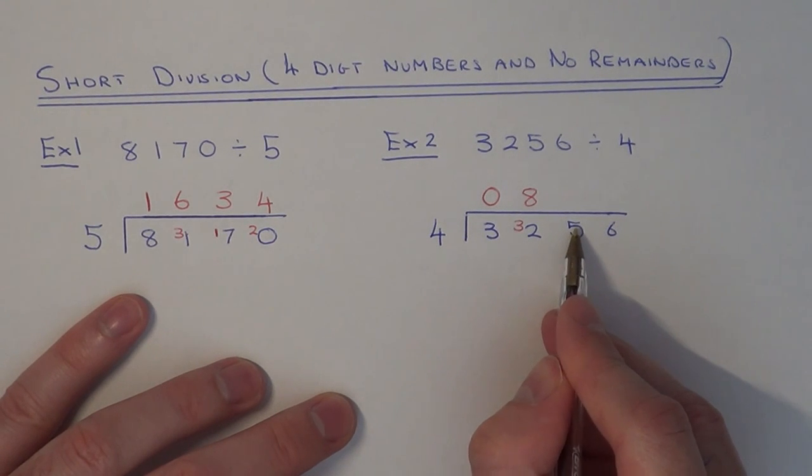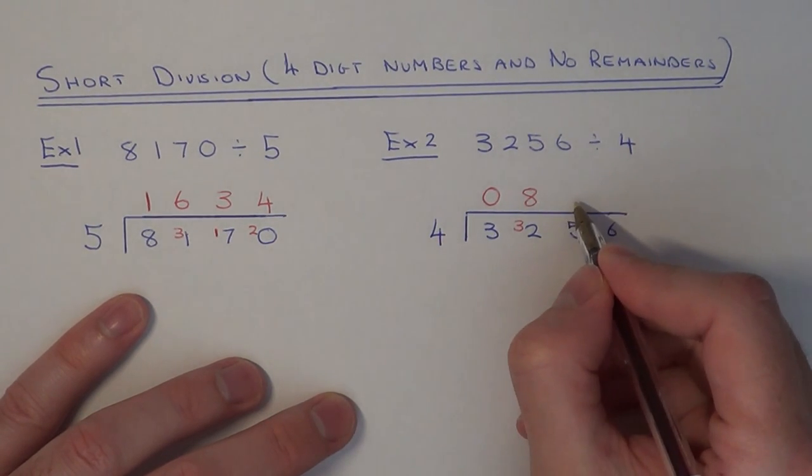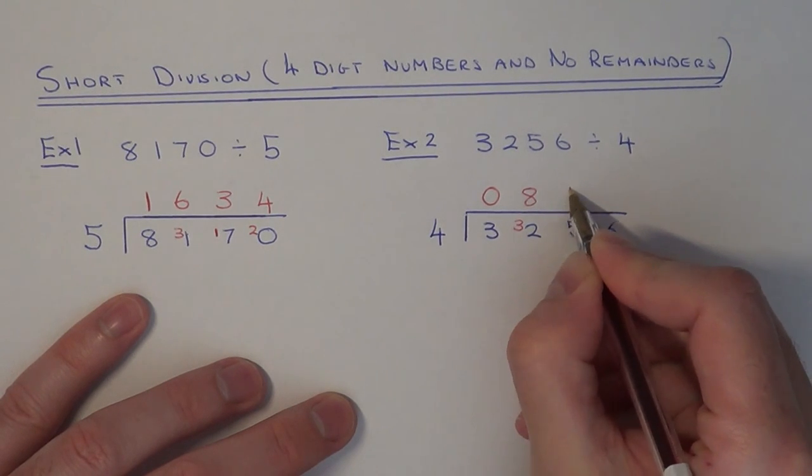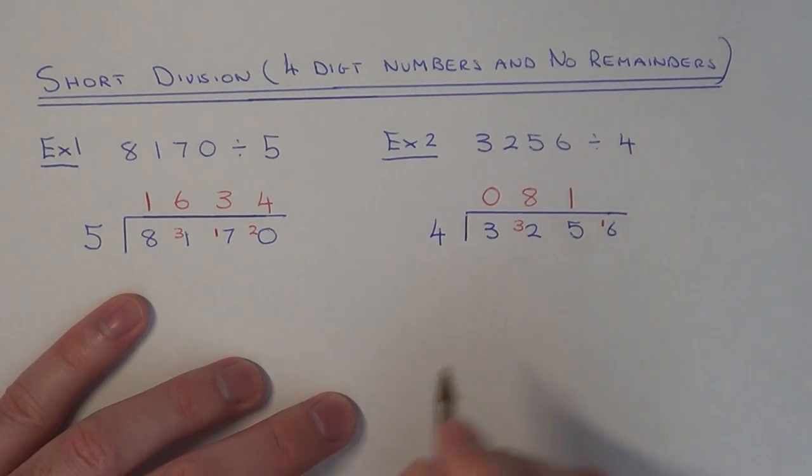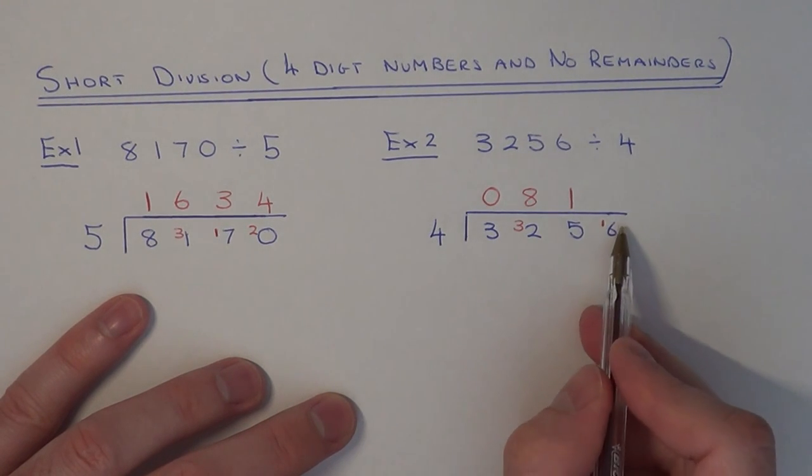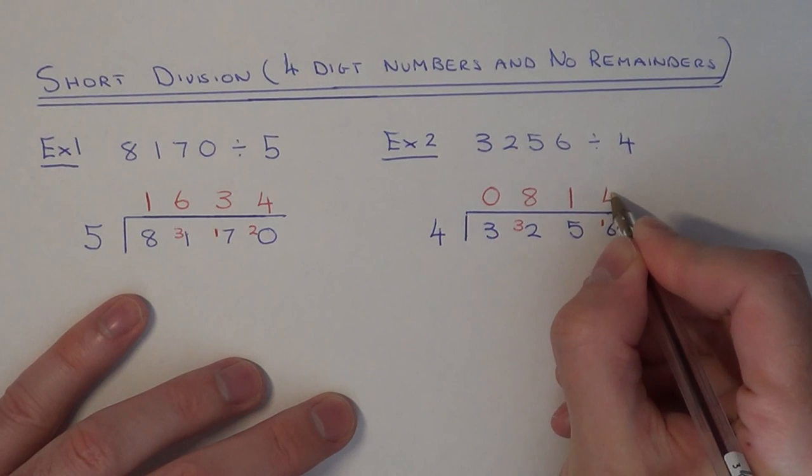Next we do 5 divided by 4. This goes 1 time with a remainder of 1. Carry this by the next number. Finally we have 16 divided by 4, and this goes exactly 4 times.